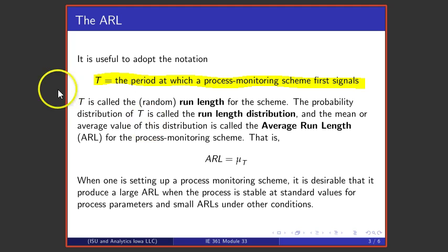Then we're going to call that variable the run length variable. So if I start doing Shewhart control charting, and every half hour I plot an X bar and I see nothing at half hour one, nothing at half hour two, nothing at half hour three, but at half hour four I get an X bar that plots outside of control limits, then I'd say that T was 4, the run length was 4.